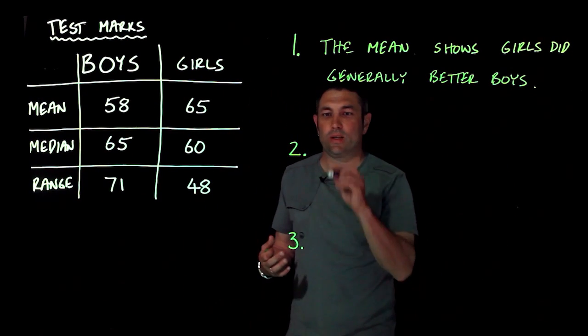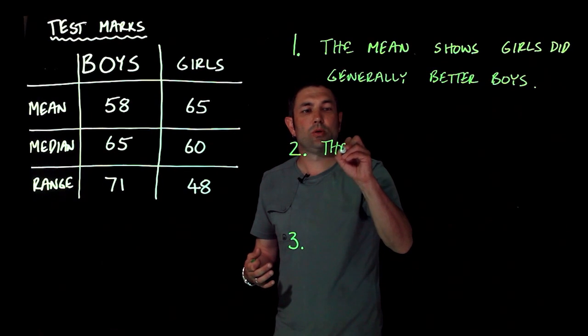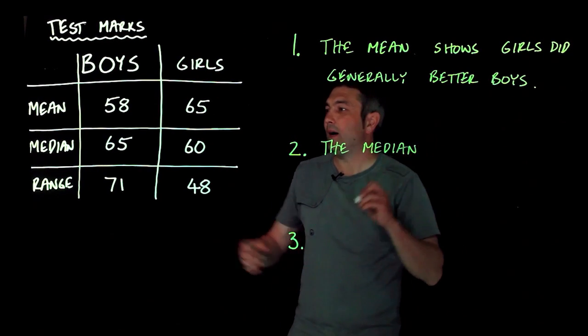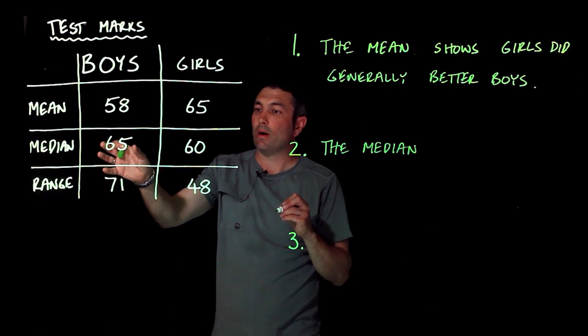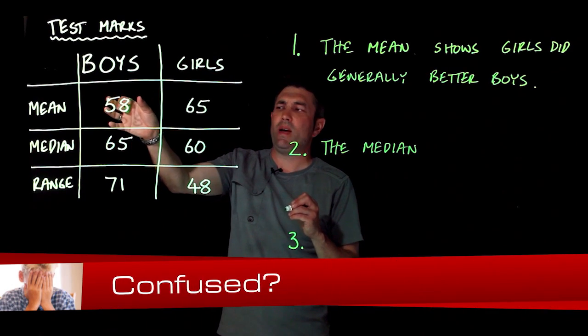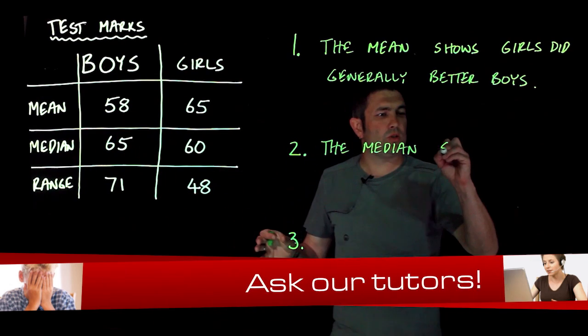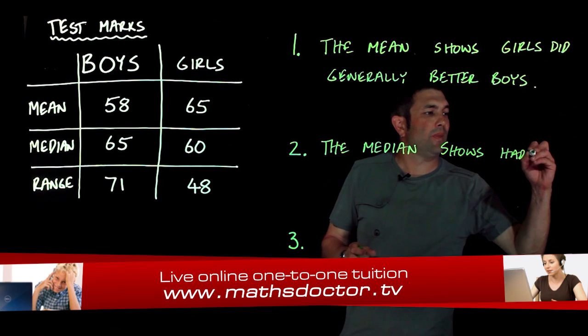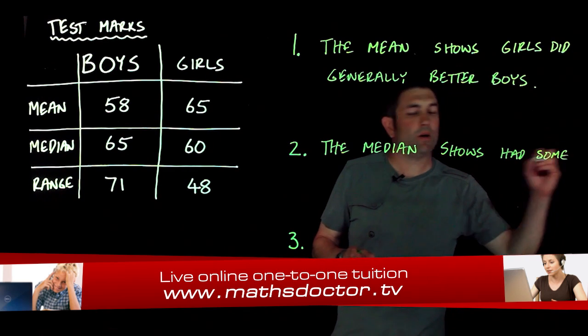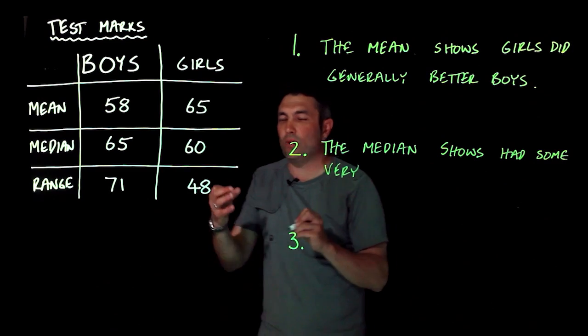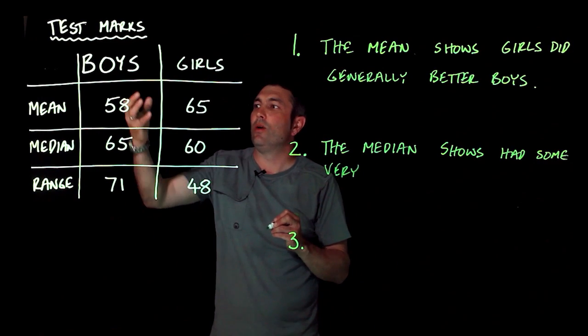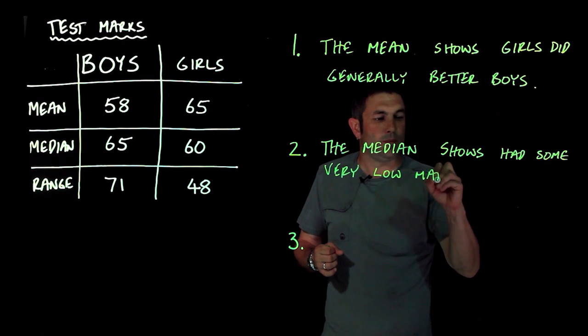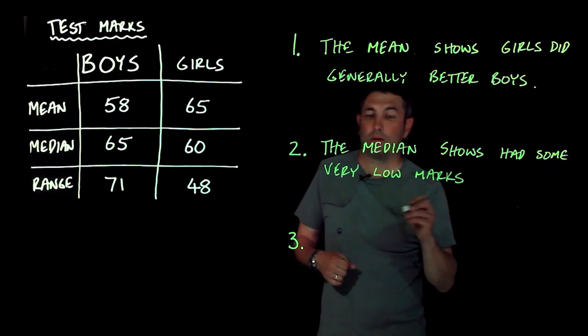Now the median is a little bit more interesting. So the median shows that although the boys actually have got a higher median than the girls, that if you look at the mean, actually what that means, the median shows that the boys had some very low marks, very low marks, meaning that even though their median is higher than the girls, the mean is lower than the girls, very low marks compared to the girls.